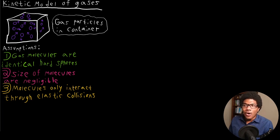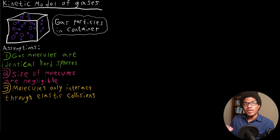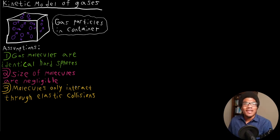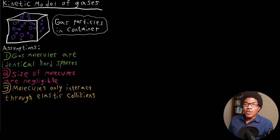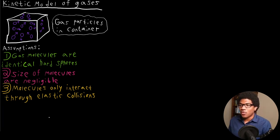The last assumption is that the molecules only interact through elastic collisions. Obviously this is not true either. When molecules come together, there are Coulombic and electrostatic interactions that happen between these particles — it's more than just an elastic collision between hard spheres. But from these three assumptions, we are able to get a kinetic model for an ideal gas.